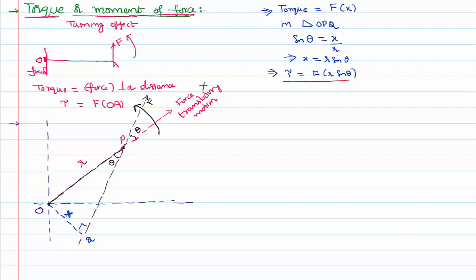From the vector definition, A cross B equals AB·sin(theta). Based on that, torque can be written as the cross product of the radius vector and the force vector: tau equals r cross F. Being a cross product, torque is also a vector quantity.